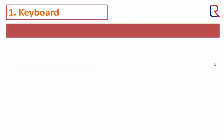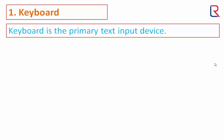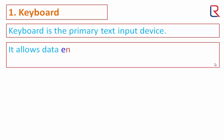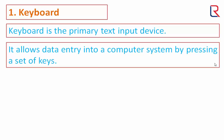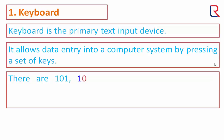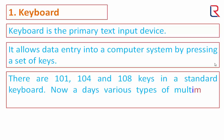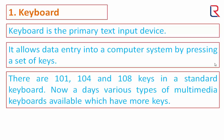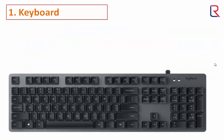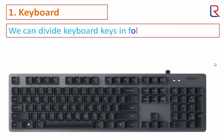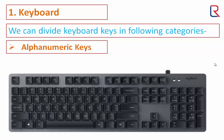Keyboard: a keyboard is a primary text input device. It allows data entry into a computer system by pressing a set of keys. There are 101, 104, and 108 keys in a standard keyboard. Nowadays various types of multimedia keyboards are available which have more keys. We can divide keyboard keys into the following categories.